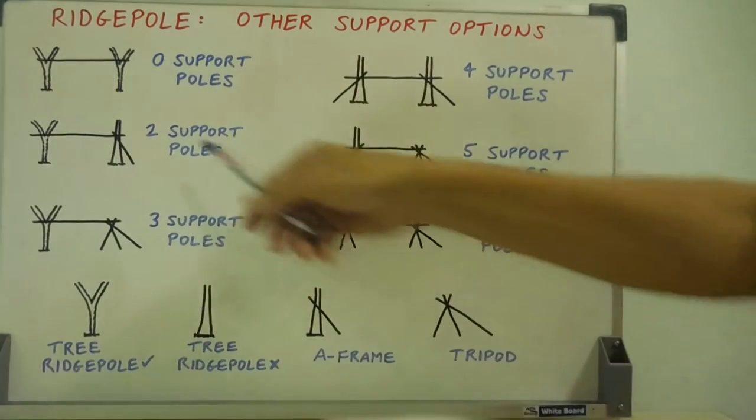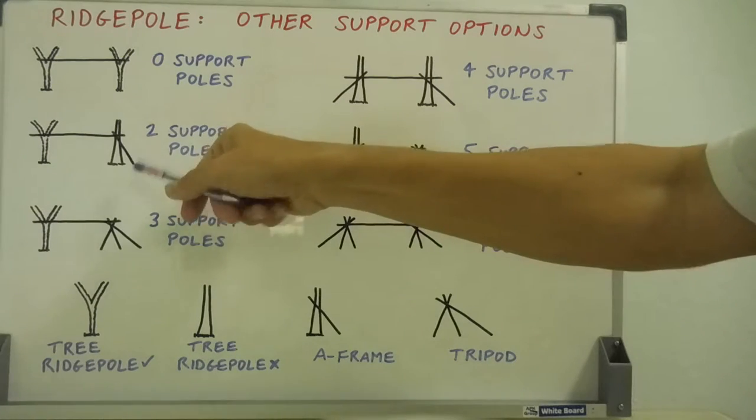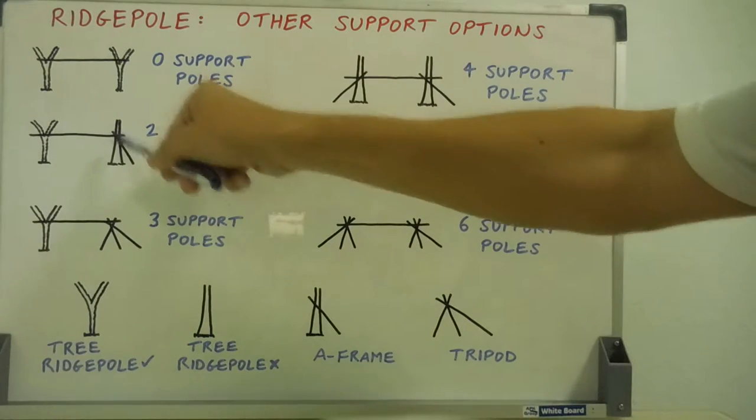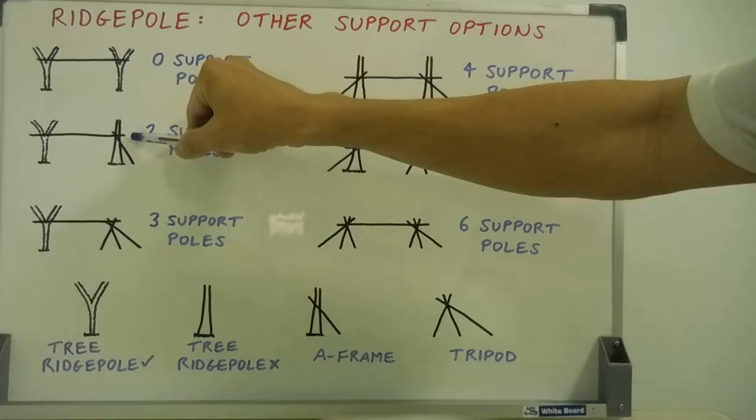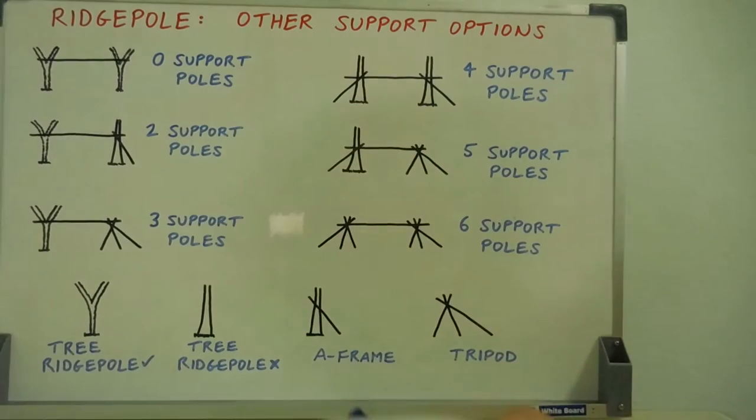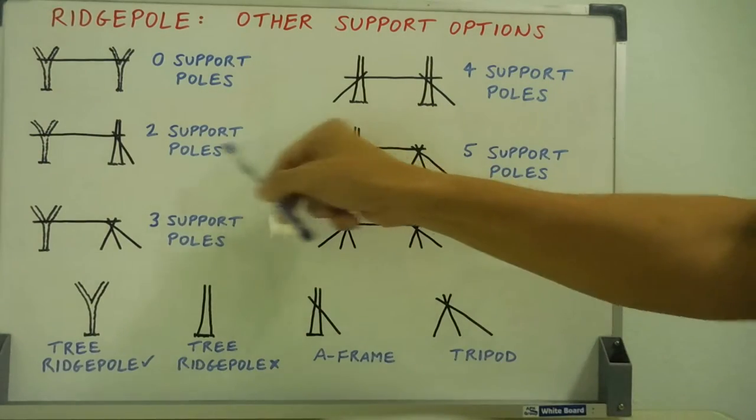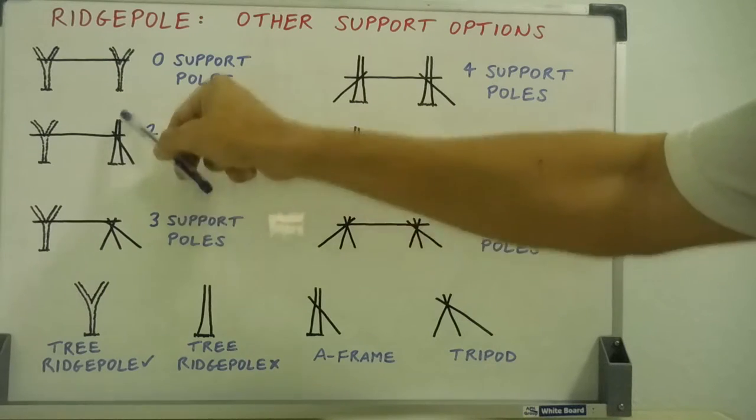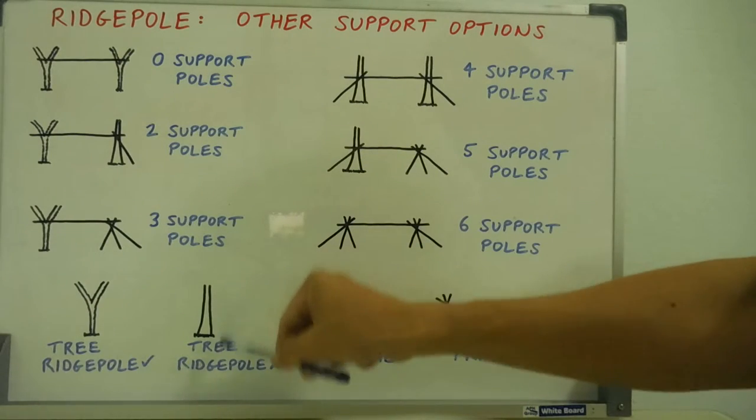If it's very thick you need long support poles to make the A-frame because you need overhang to support the ridge pole on. But if it's a thinner tree then it's a lot easier to do. So there's two support poles with an A-frame up against a tree that cannot support a ridge pole.